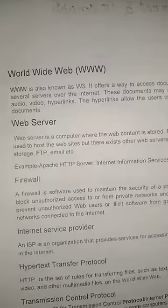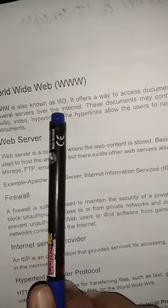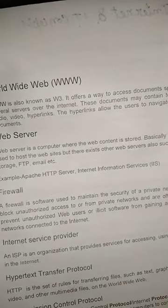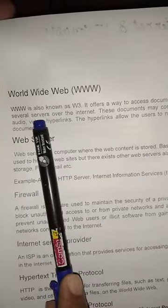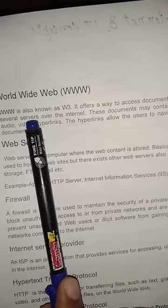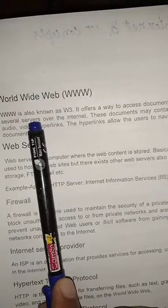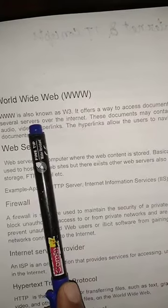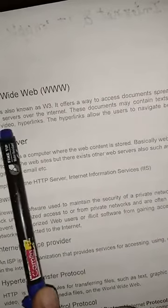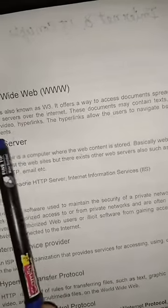Our next topic is WWW, also called W3 — World Wide Web. WWW offers a way to access documents spread over several servers over the internet. A server is a machine that serves its clients. These documents may contain text, graphics, video, and hyperlinks. Hyperlinks allow users to navigate between documents.